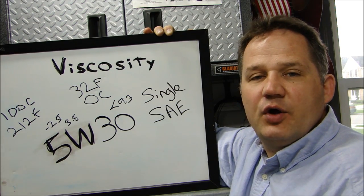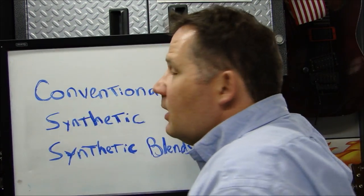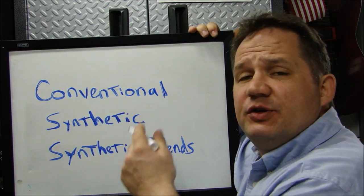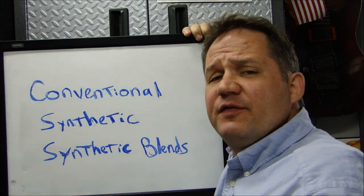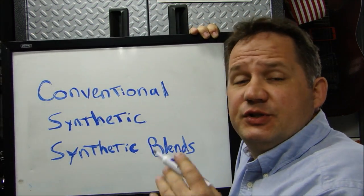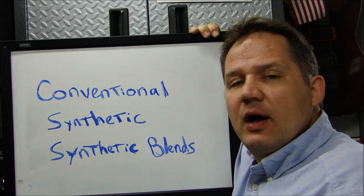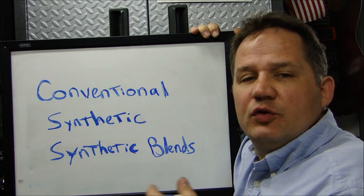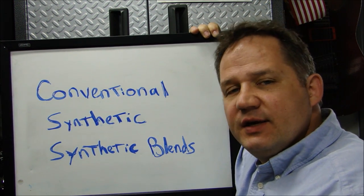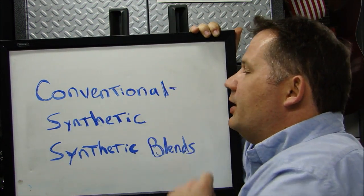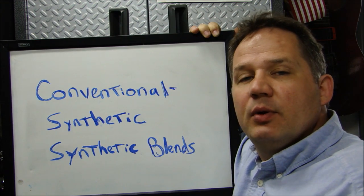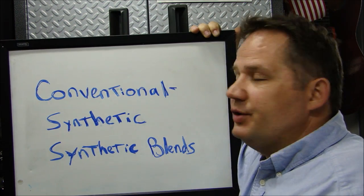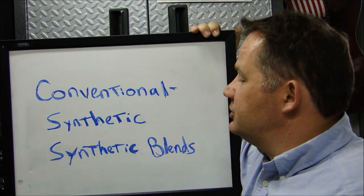Now let's talk about the different types of oil you can buy. There are three basic types: conventional, synthetic, and synthetic blends. Conventional motor oil is the cheapest — it's crude oil pulled from the ground, refined, and delivered as either single or dual viscosity oil. Since it comes out of the ground, it has more sulfur and more pollutants. It's a hydrocarbon, it burns dirty, and puts out more pollutants — it's the most dirty of the oils.